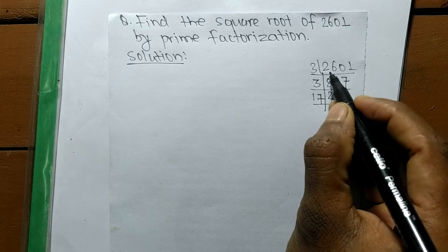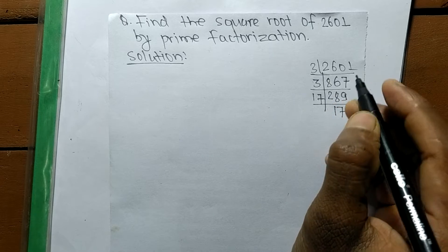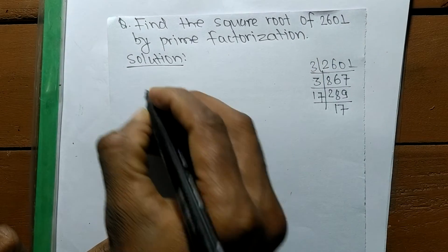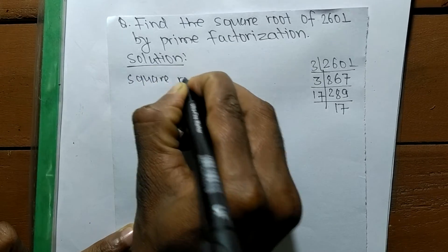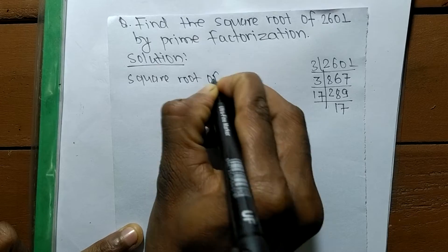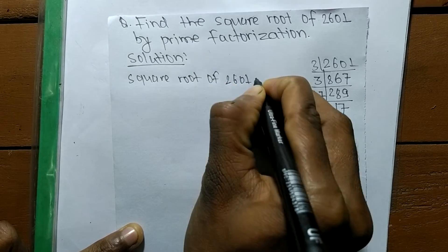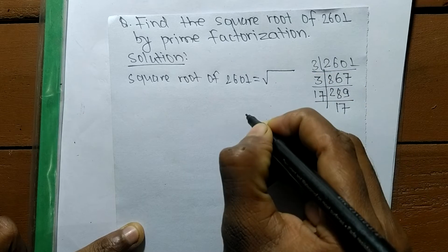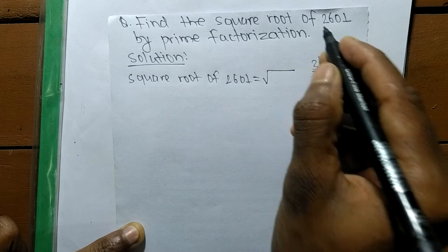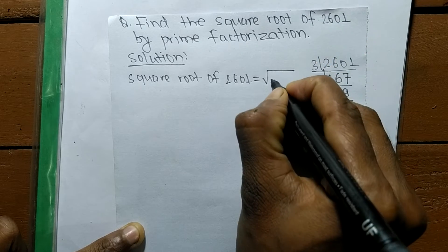So we have found the prime factors of 2601. We are finding the square root of 2601, so square root of 2601 is equal to - this sign is square root - and we are finding square root of 2601.